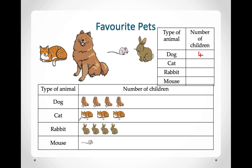How many kids like cats? 1, 2, 3 — so we have 3 cats. How many kids like rabbits? 1, 2, 3, 4 — so we will write 4. How many kids like mice? Only one. And there you have it — this is how the information is written as a pictograph; it uses pictures to show us our information.